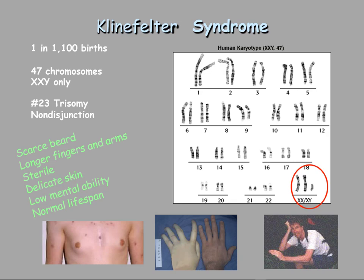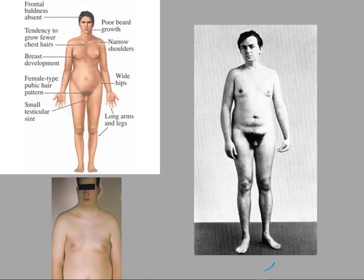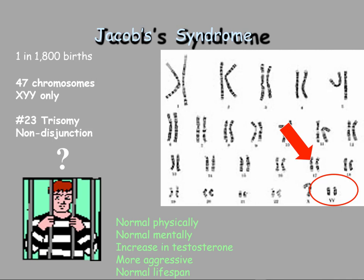Klinefelter syndrome has an XXY scenario — happens in about 1 in 1,100 births. This is where you have some characteristics of both male and female, and those characteristics may or may not show up visibly. There was a situation with a female track athlete who was thought to be doping using testosterone to enhance performance, and it turned out she was Klinefelter's — but you couldn't tell in a locker room, and unfortunately she was disqualified. Jacobs syndrome has an XYY scenario — two Y chromosomes. They're sometimes described as more aggressive, and there's a correlation with testosterone.